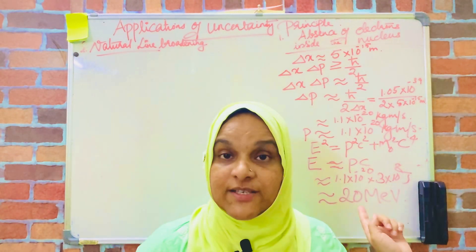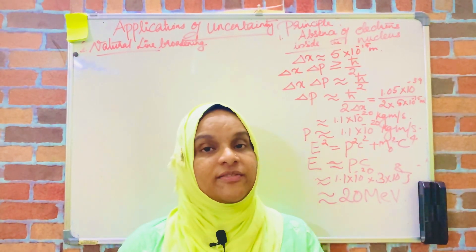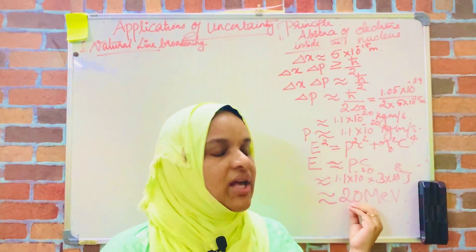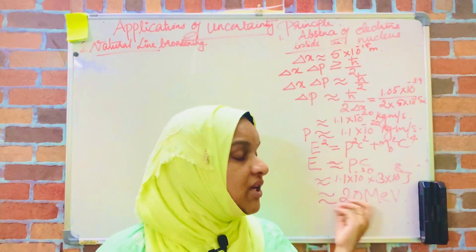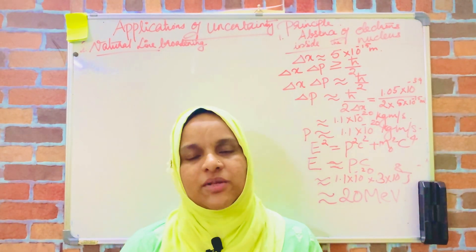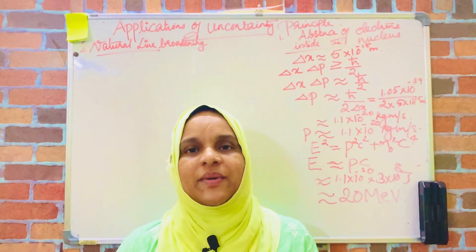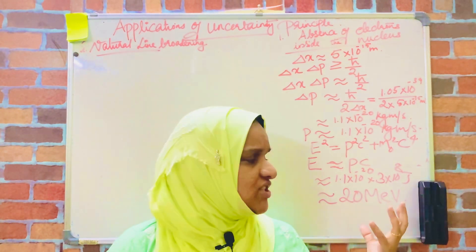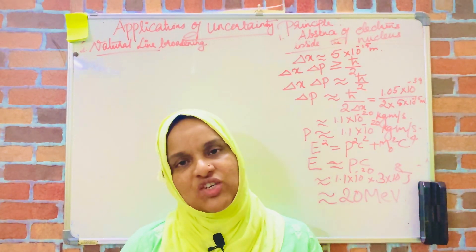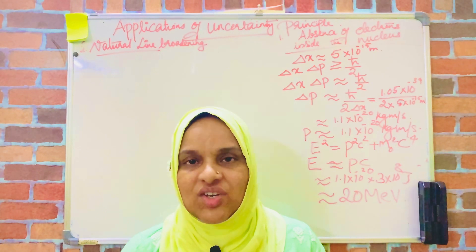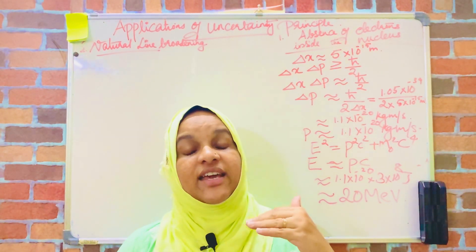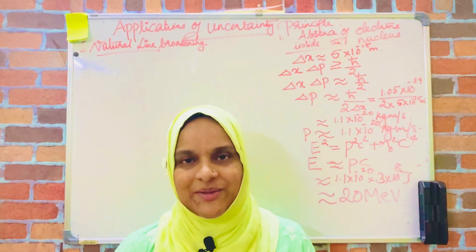This is the energy an electron would need if it were present inside the nucleus. That is, the nucleus would have to hold an electron with a minimum energy of 20 mega electron volts. But experiments show that even electrons in unstable atoms do not possess such a high amount of energy. Therefore, electrons cannot be present inside the nucleus because they can never achieve such a large amount of energy.